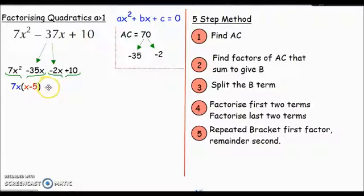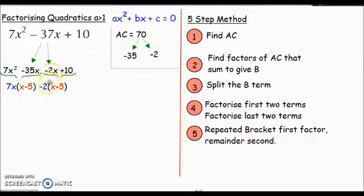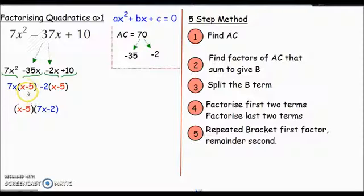Let me go over that again. I factored out a -2 because I wanted the same bracket twice—a repeated bracket. That repeated bracket is my first actual factor, my first bracket. To get the second bracket, it just says the remainder. What is left outside—the blue bits—are the second bracket. So when you finish, you write down your repeated bracket as the first factor, (x - 5), then put whatever's left, the blue bits 7x and -2, into the second bracket: (x - 5)(7x - 2). That is it factorized.